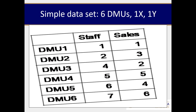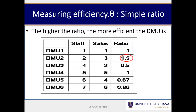Now let's look at this dataset. How do we assess efficiency using simple ratios? For people who do accounting, this is how you go about it — you measure efficiency in a simple ratio format. The ratio is computed as output over input. So if you look at the ratio column: one over one gives you one, three over two gives you 1.5.